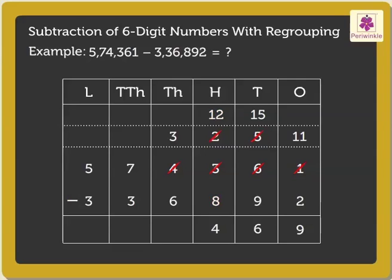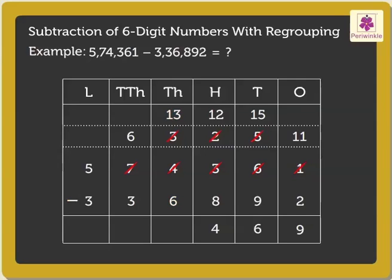Now subtract the thousands, i.e., 3 minus 6. As there are not enough thousands, we regroup 7 ten-thousands and 3 thousands as 6 ten-thousands and 13 thousands. Therefore, 13 minus 6 is equal to 7.